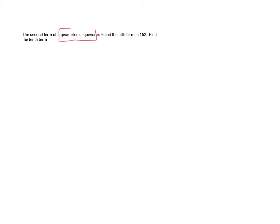There are several ways of doing this. I'll just show you my way. First of all, very important is that we're talking about a geometric sequence — so not an arithmetic, but a geometric sequence. The nth term rule is: u_n equals the first term times the common ratio to the power n minus 1.